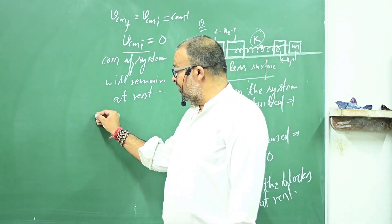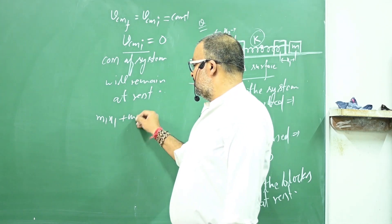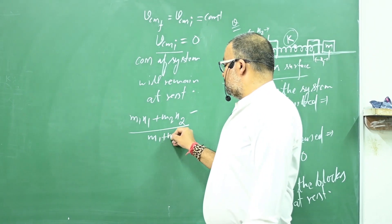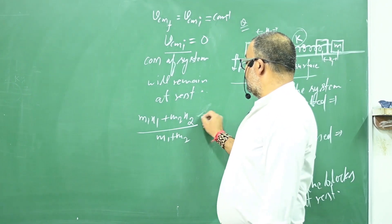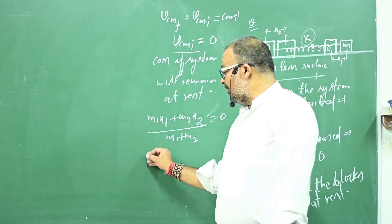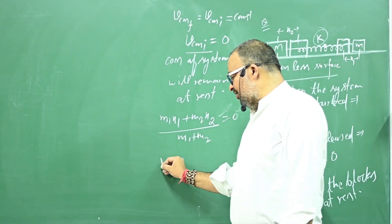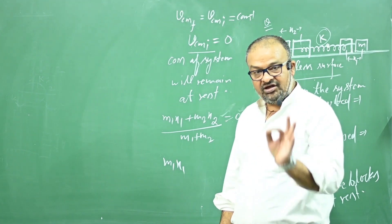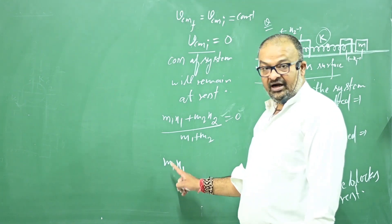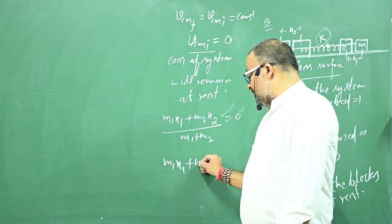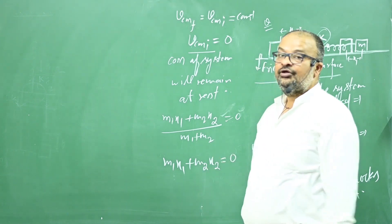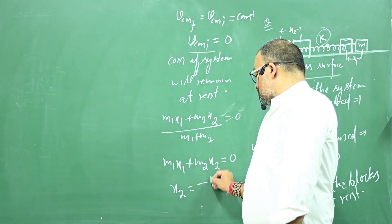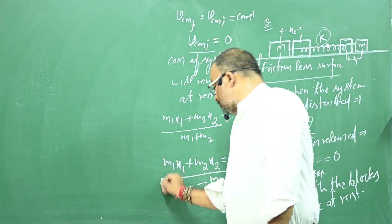For this type of question, we write: M1·x1 + M2·x2 divided by (M1 + M2) equals 0. When the center of mass of the system is zero, you can directly use the formula M1·x1 + M2·x2 = 0. From this you can find x2 in terms of x1: x2 = minus (M1/M2) · x1.